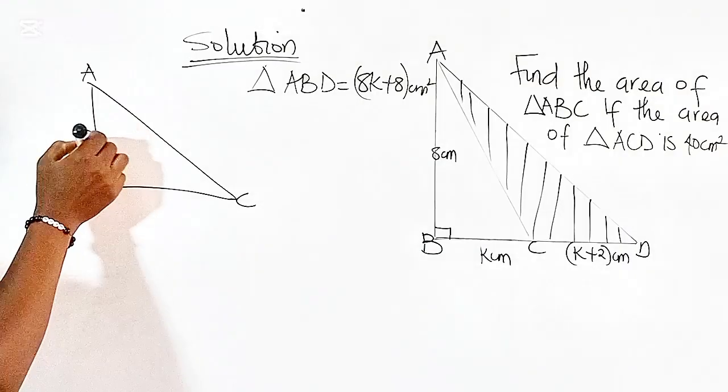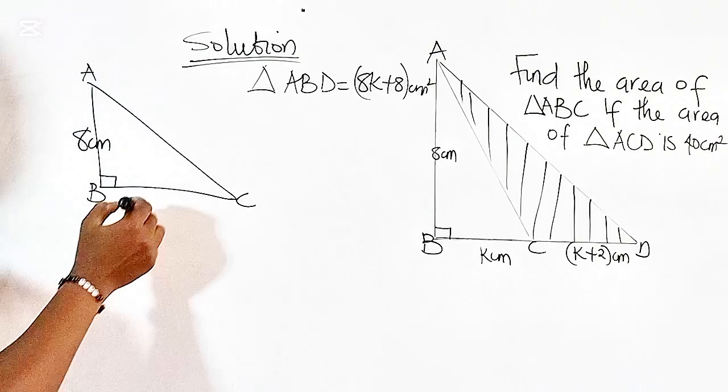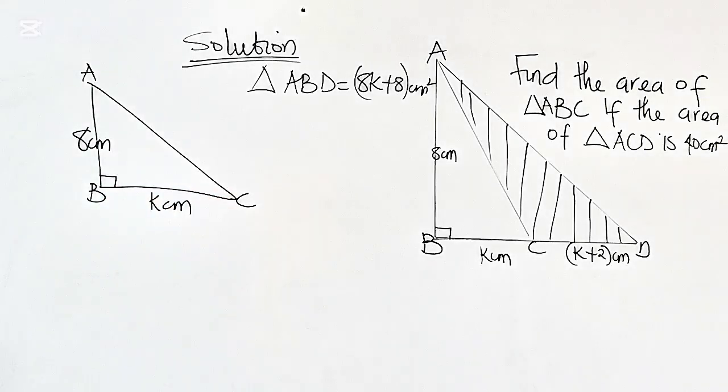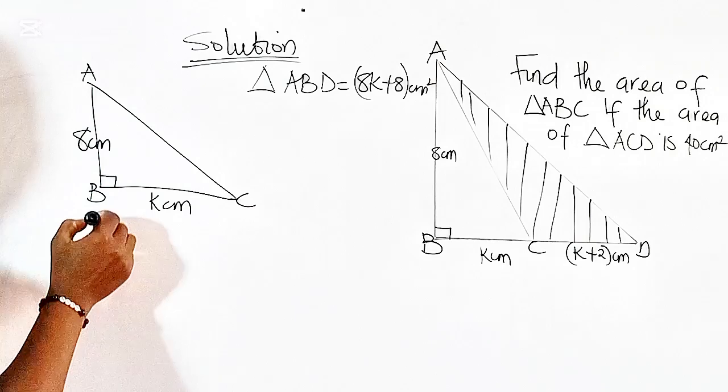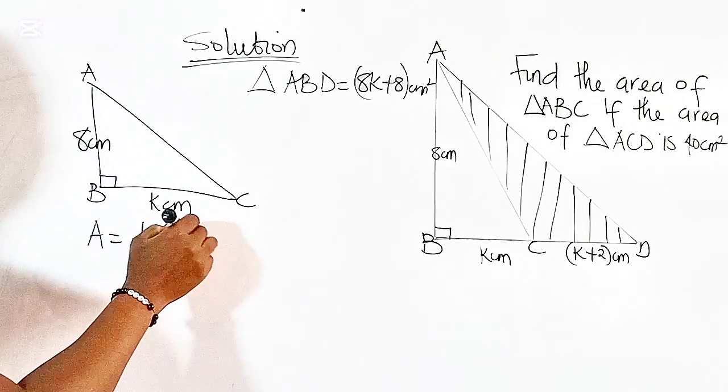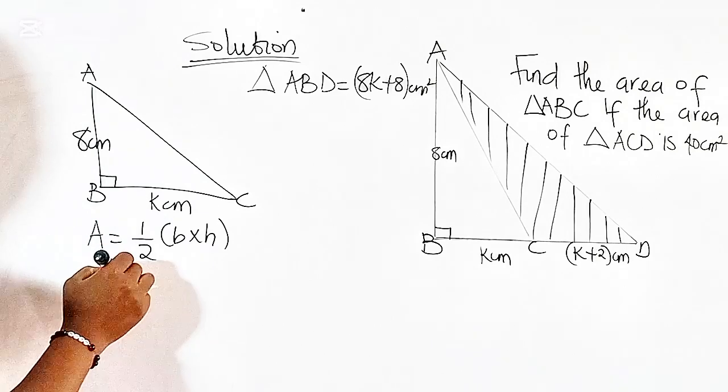The height is also 8 cm and the base is K cm. So applying the same formula, we have the area of the triangle to be half times base times height.